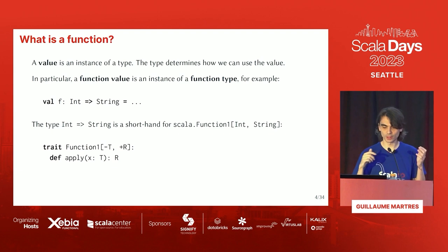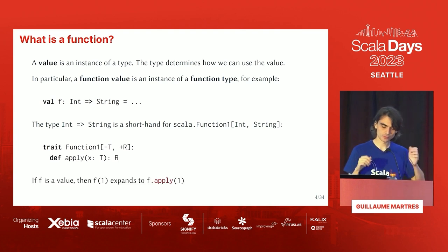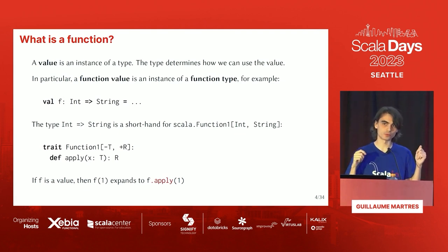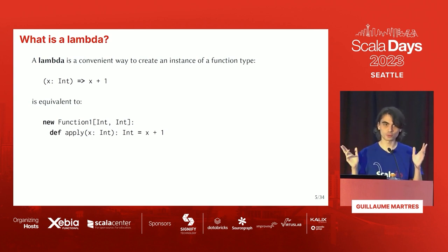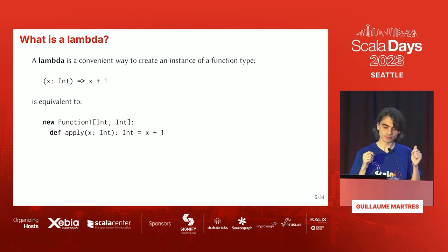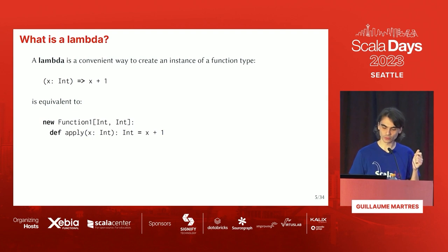Int to string is not magic — it's just syntactic sugar for Function1[Int, String], where Function1 is a trait that takes a type parameter representing the input and one representing the output, and defines an apply method. When we try to use F as if it was a method by passing it arguments, the compiler expands that to a call to the apply method. The next concept I want to define is a lambda, which is just a convenient way to create an instance of a function type. So writing x => x + 1 is the same as making an anonymous instance of Function1 with an apply method that takes x and gives you back x plus one.